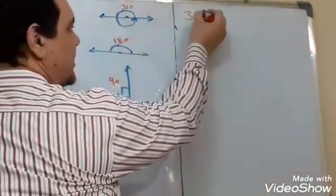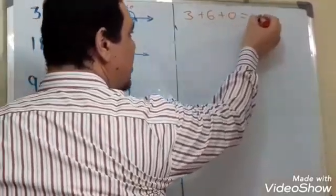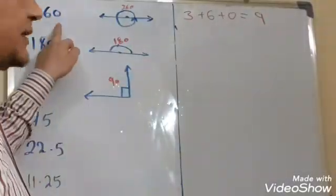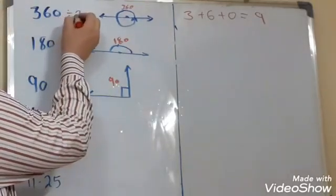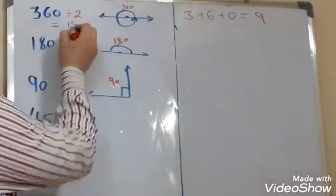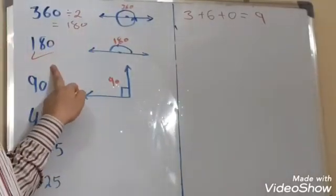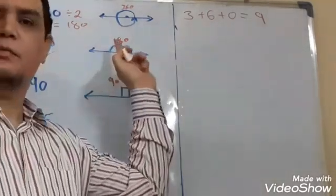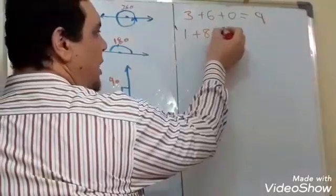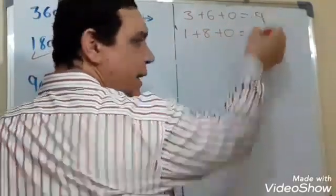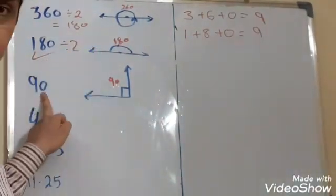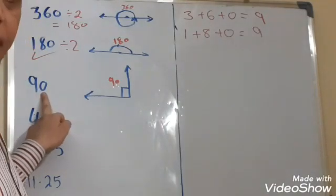If we divide 360 by two, we get 180. One hundred eighty is the straight angle. If we add all digits of this number: 1 plus 8 plus 0 equals nine. Then 180 divided by two equals 90. Ninety is the right angle. If we add the digits: 9 plus 0 equals also nine.